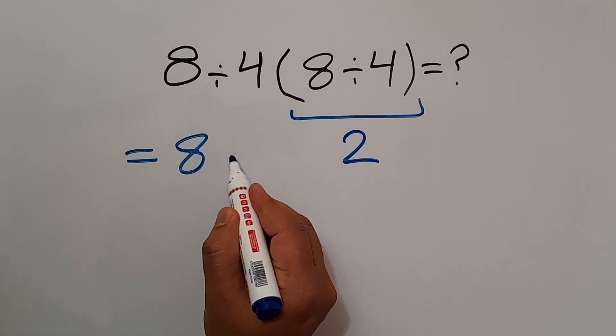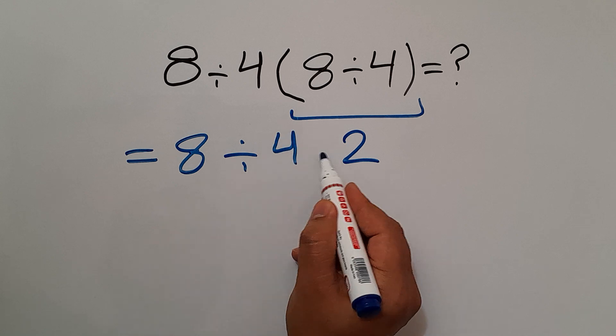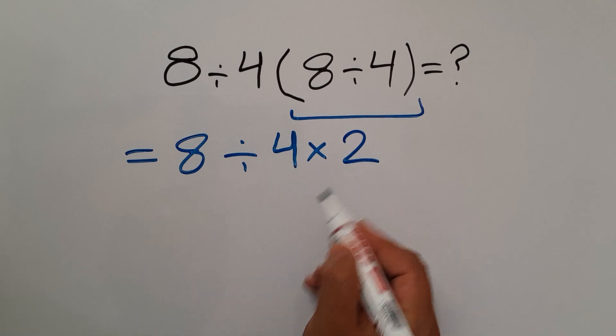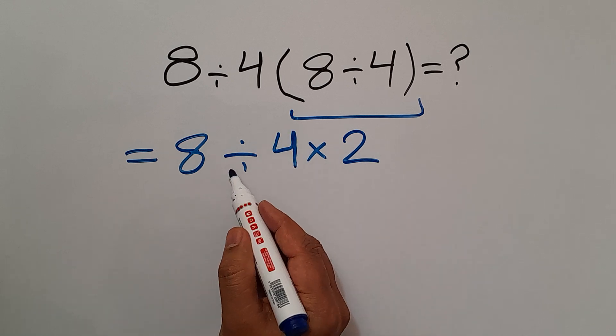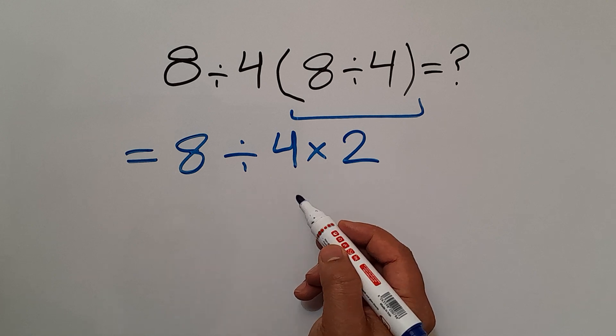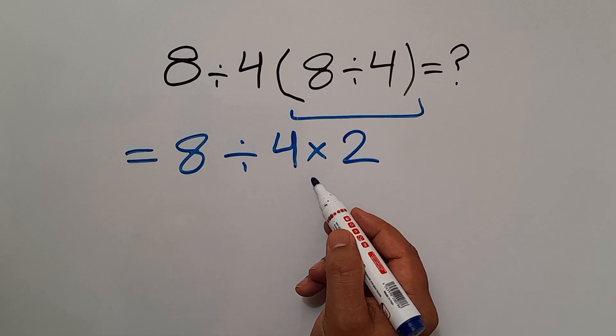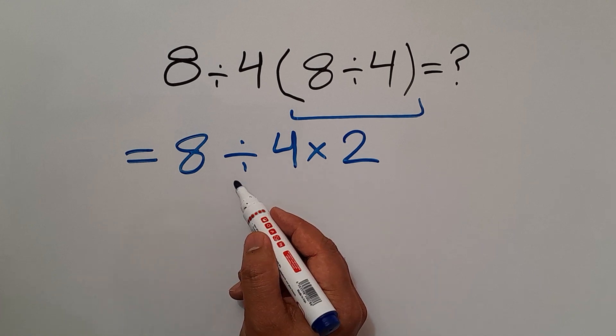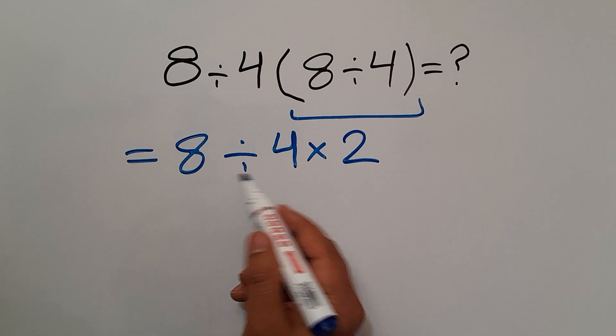Okay, and now we have one division and one multiplication. According to the order of operations, multiplication and division have equal priority, and we have to work from left to right.